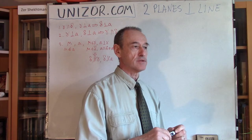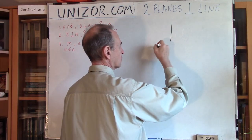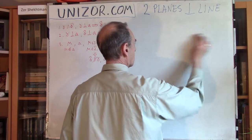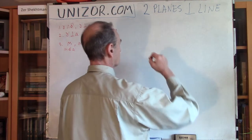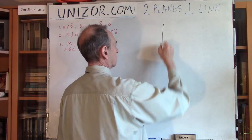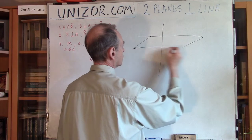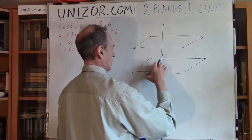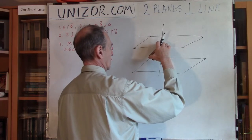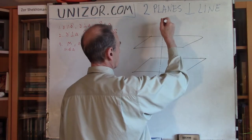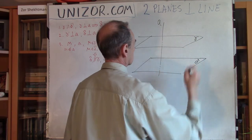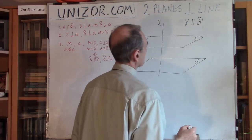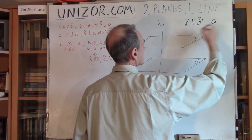In the previous lecture, the first theorem was: if you have two parallel lines and one of them is perpendicular to a plane, then the other one will also be perpendicular to the plane. Now the first theorem here is very similar, but planes are lines and lines are planes. So let's assume you have one line and two planes, gamma and delta, which are parallel to each other — meaning they do not have any common points, no intersection. And I know that the line is perpendicular to one of them.